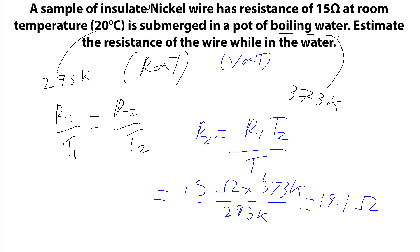This is how we can simply model the way in which resistance — and equivalently resistivity — changes with temperature over small ranges, and it turns out this can actually be quite an accurate way of doing it.